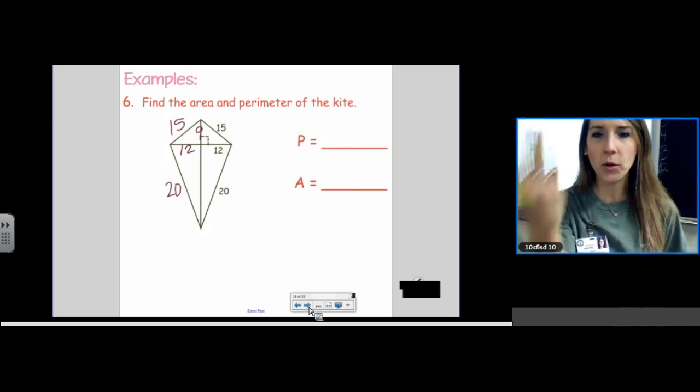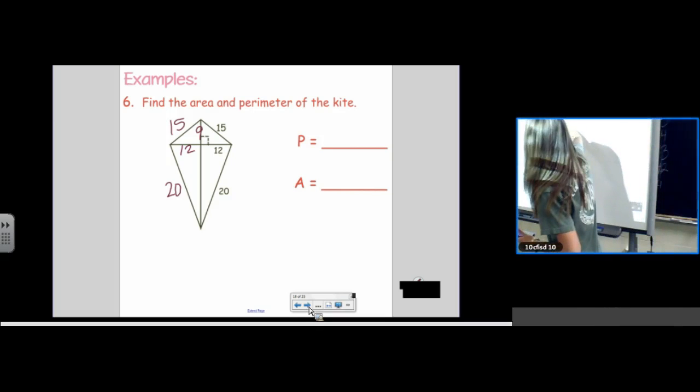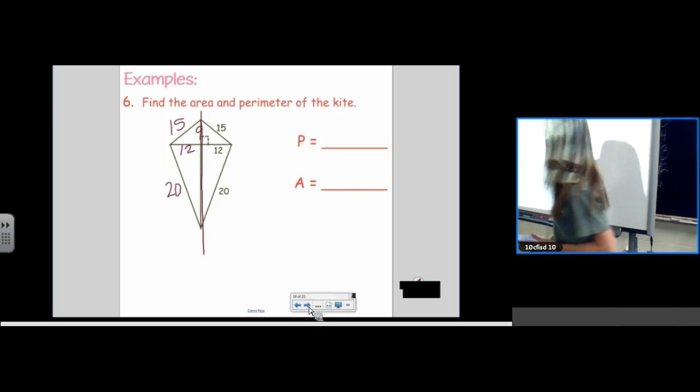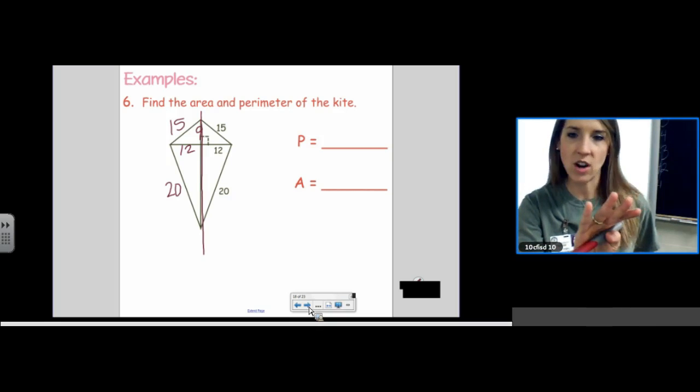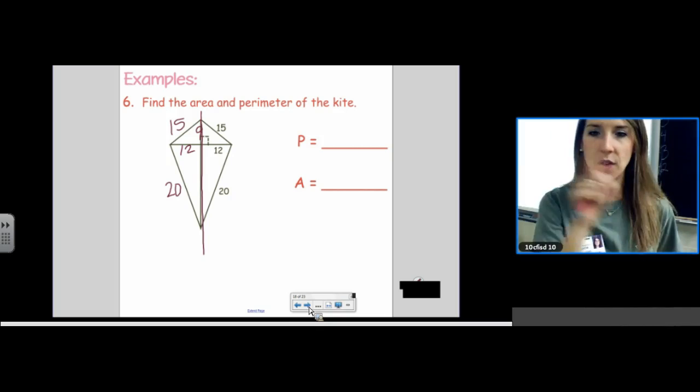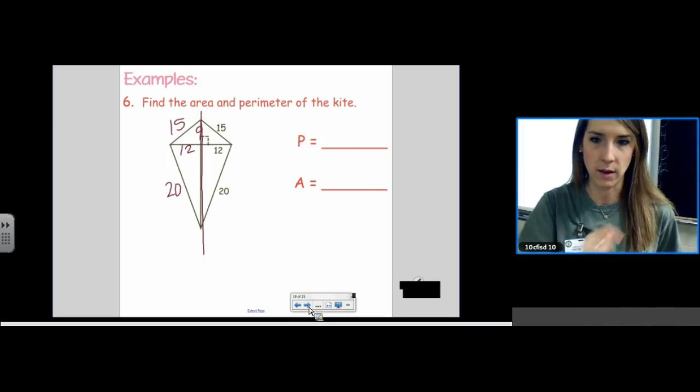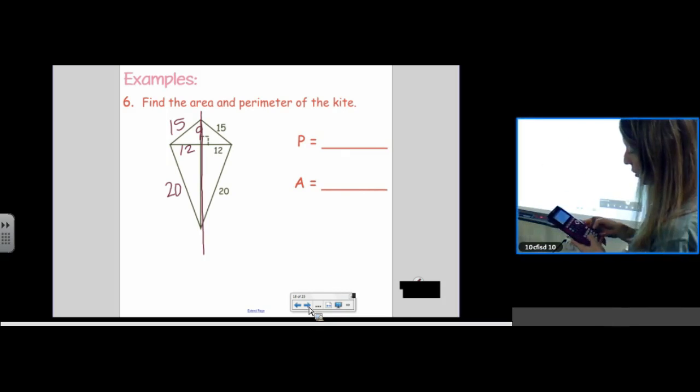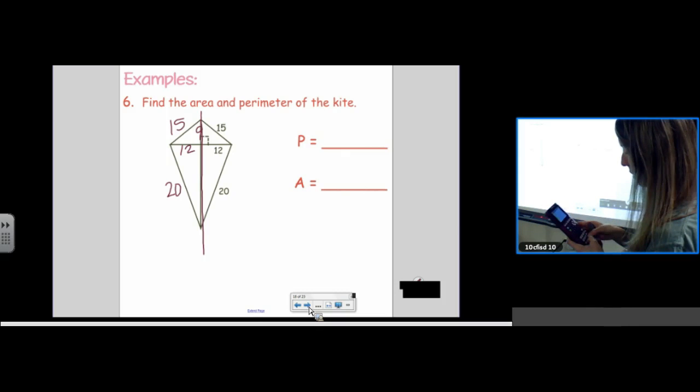Do you see how many properties you're kind of having to pull back into play here? Just think of it, the kite folding over on the axis of symmetry. Think of it folding. And then, all the numbers just land on each other. They just match. 15 lands on 15, 12 lands on 12, 20 lands on 20. Okay. 20 squared minus 12 squared. The square root of 256.